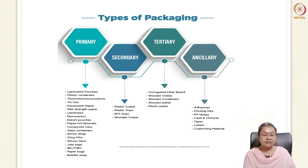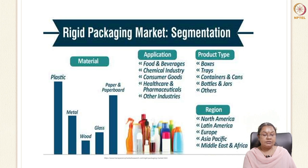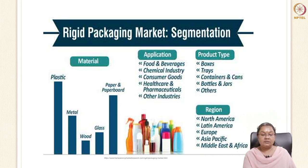This slide shows the comparison between different materials. Plastic materials as packaging are very much in demand, and after plastics, paper and paperboard items come next. Their applications are in food and beverage industries, chemical industries, consumer goods, healthcare, and pharmaceuticals, going as rigid packaging in the form of boxes, trays, containers, and bottles. In the world market segments, North America utilizes these packaging materials in the largest amount compared to other parts of the world.